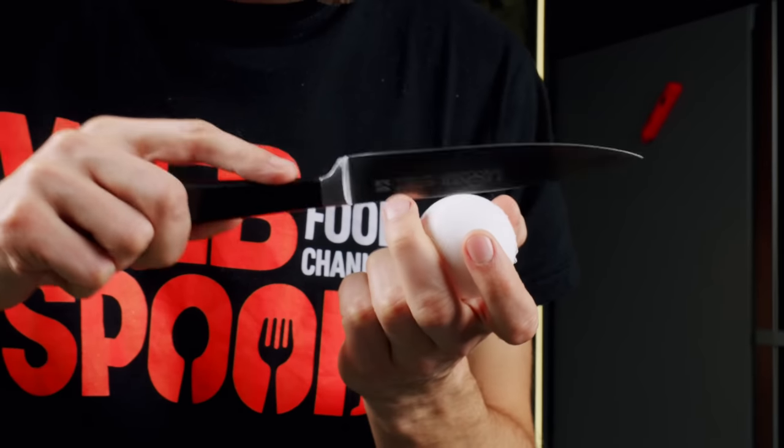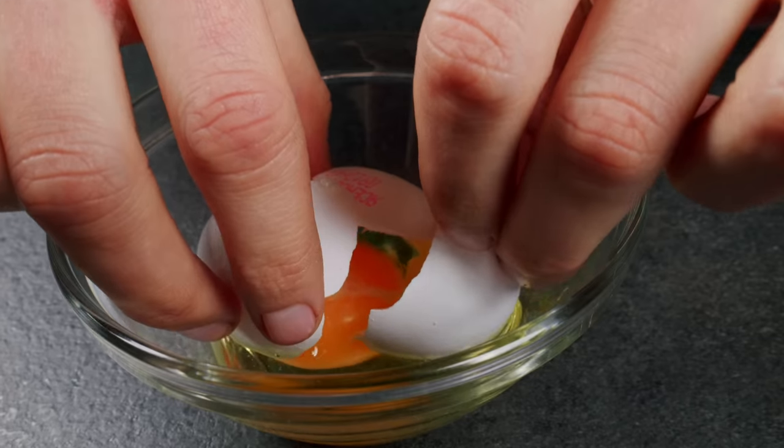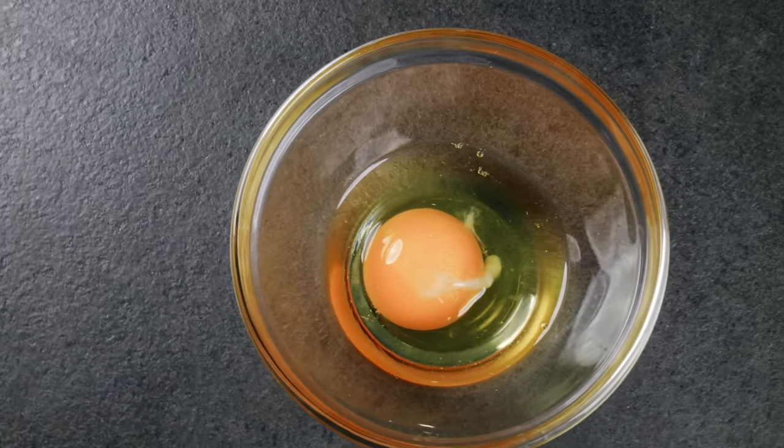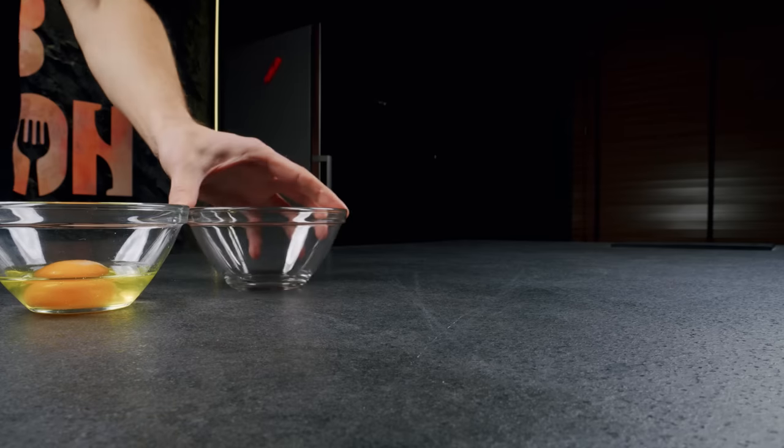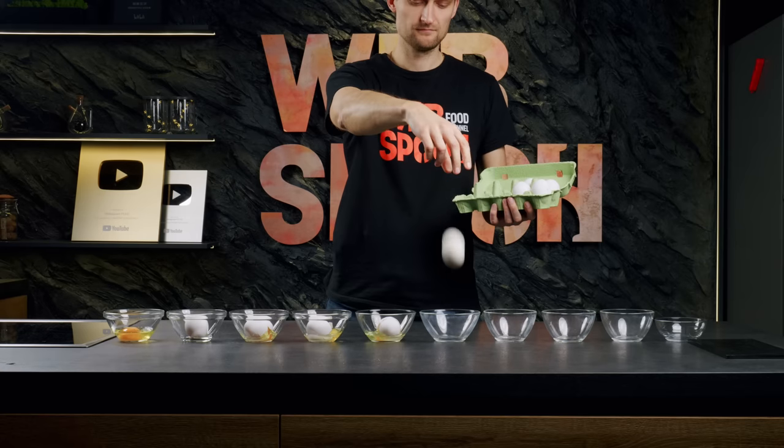Did you know that you don't need to be gentle while breaking an egg? Here's an easy trick. Just throw it into a bowl and pull the shell out. The yolk remains intact and there won't be any shell pieces left in the bowl. Let me show you. I can do it ten times in a row and the result is always the same.